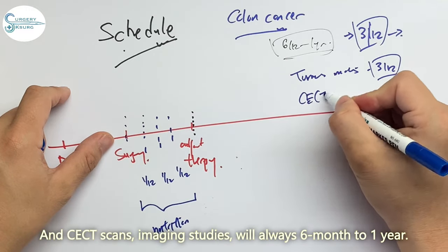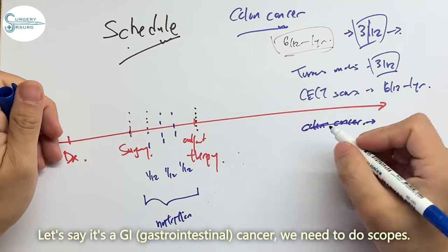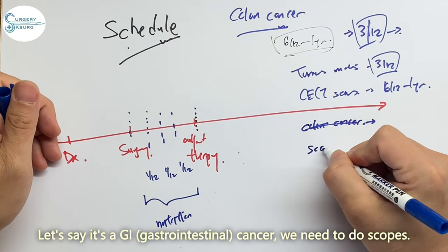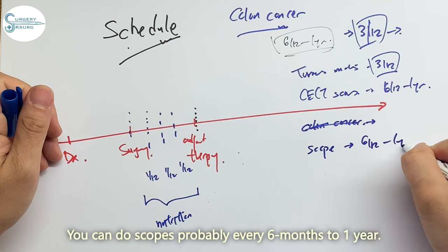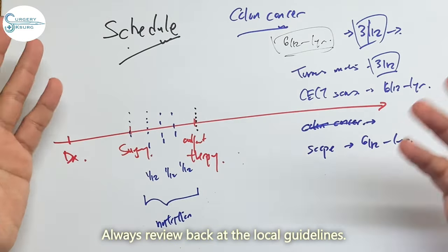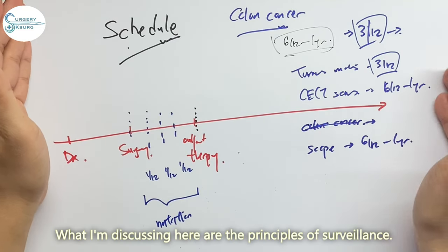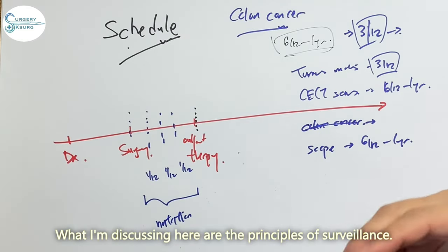And CT scan imaging study will always be six months to one year. Let's say it's a GI cancer, you need to do scopes. You can do scopes probably six months to one year. And it depends on the local guideline as well. Always review back at the local guidelines. What I'm discussing here is the principle of surveillance.